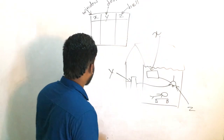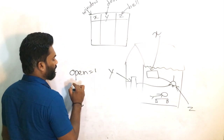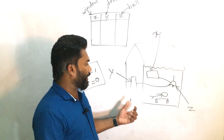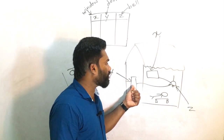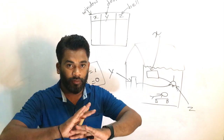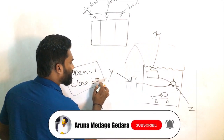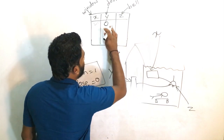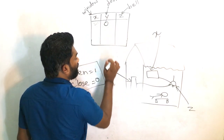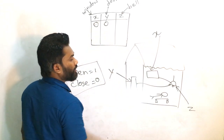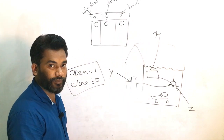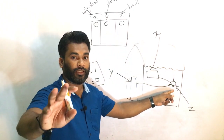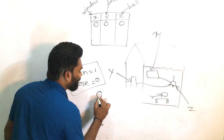I'll take open process as 1 and closed process as 0. When we look at this house, the door is closed and the window is also closed, then the bell is not ringing. The closing process is zero. So when both door and window are closed, the bell is not ringing — I write zero here.